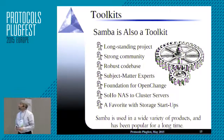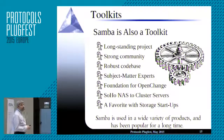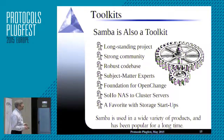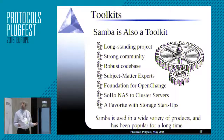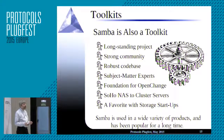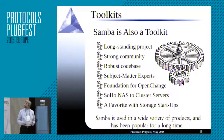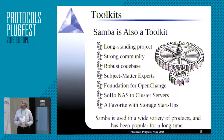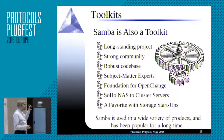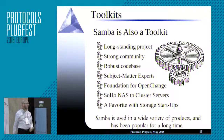Samba is also a toolkit — a very long-standing project with a very strong community. It's big enough to have its own conference every year. It has a robust, really hardened code base. There are bugs, we find them all the time, and we fix them — what a concept. It is the foundation for Open Change, which is built on top of it. It's used in everything from little SOHO NAS devices — tiny ARM-based devices you plug in at home — to clusters of large-end servers.